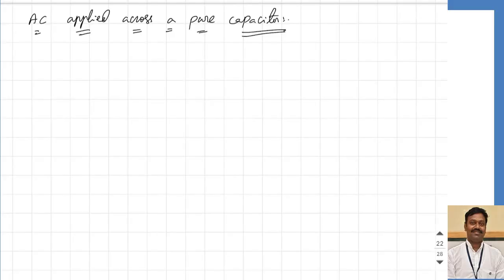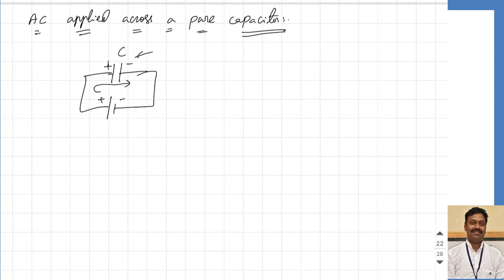Before proceeding, if you are applying DC to a capacitor of capacitance C, initially the capacitor will get fully charged — this plate will be charged to positive, this plate will be charged to negative. Only during the transient response will the current pass and it will get completely charged. Once it is completely charged, it will act as an open circuit or as a resistor of infinite value — it will not pass any current once completely charged.